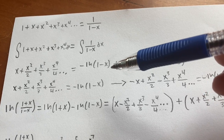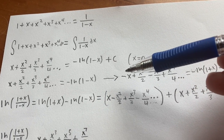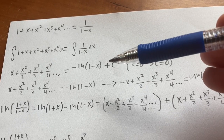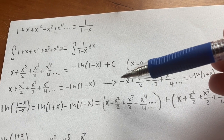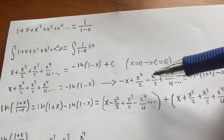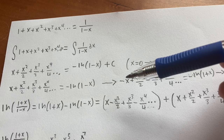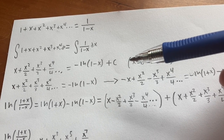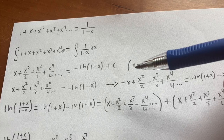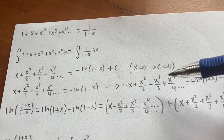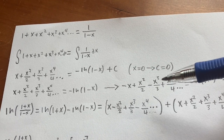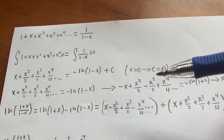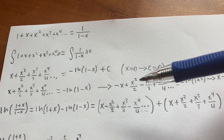What would happen if we switched the sign of x? We see that on the left-hand side, all the terms with an odd power of x in them would become negative because a negative number to an odd power is negative. However, all the terms with an even power of x would stay the same because a negative number to an even power is a positive number, so the sign of those terms will not change.